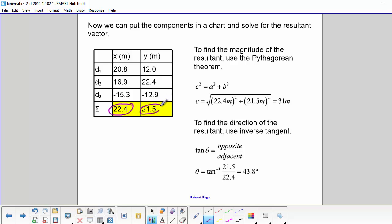So we use Pythagorean theorem to find the resultant. So C squared equals A squared plus B squared. So C equals the square root of 22.4 squared plus 21.5 squared, and we get 31 meters.